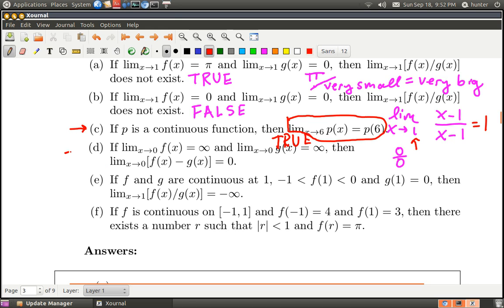This one reminds me of B because it's saying something goes to infinity and another thing goes to infinity. What happens if you take the limit of their difference? Your brain might say infinity minus infinity is zero. But that's actually not true. The answer to this is false.